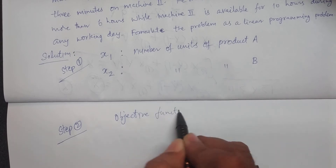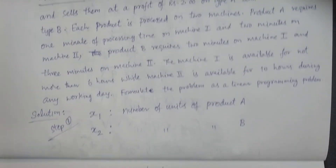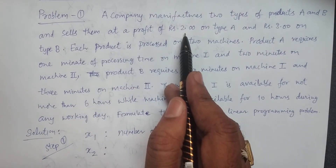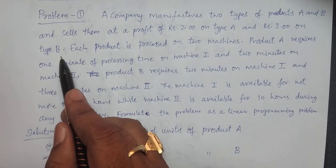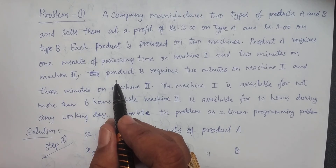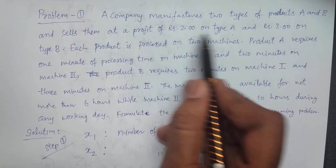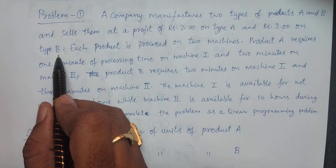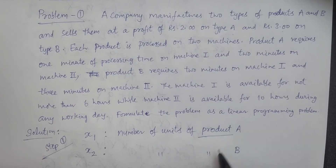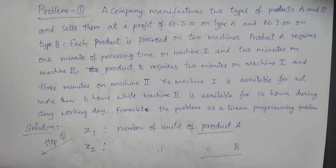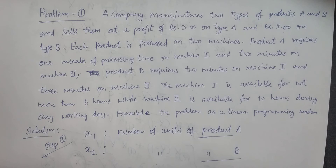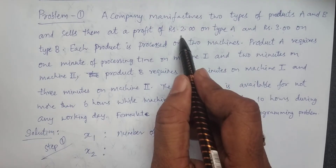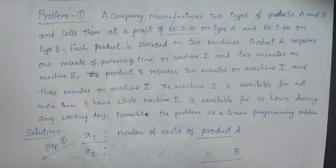What is the objective of this particular problem? The company sells at a profit of two rupees on type A and three rupees on type B. The profit on one unit of product A is two rupees; therefore, the profit on X1 units is 2X1 rupees.